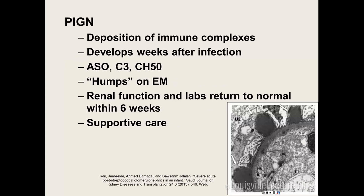Post-infectious GN — often called post-strep — can be caused by any infection including endocarditis. It's due to deposition of immune complexes. The classic presentation is someone who had a URI or skin infection weeks ago, and weeks later presents with cola-colored urine and AKI. If it's strep, ASO may be elevated. Complement will be low — C3 will be low. On electron microscopy you see humps. Kidney function and complement should normalize within six weeks; if not, biopsy is needed. We don't routinely biopsy post-infectious GN as it won't change management. Treatment is supportive.